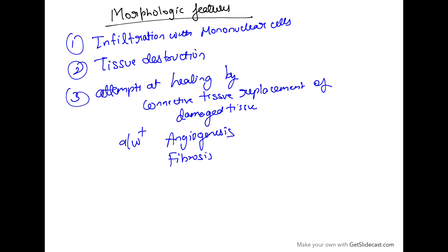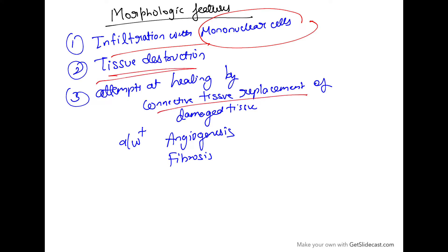The morphological features are: infiltration with mononuclear cells, tissue destruction, and healing attempts by connective tissue replacement of the damaged tissue, plus angiogenesis and fibrosis. So these characteristic features of chronic inflammation include mononuclear cell infiltration, tissue destruction, fibrosis, angiogenesis, and attempts at healing by connective tissue replacement.